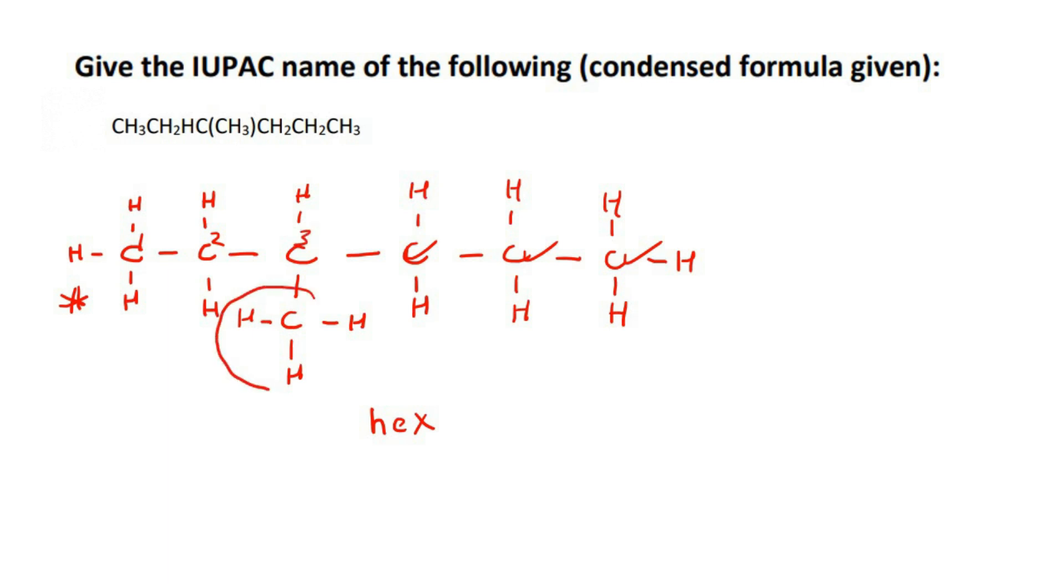In this branch, there is one carbon, so that's meth. We can say methyl because it's a branch. So on carbon three, there is a methyl, and then this whole molecule, is it an alkene, alkyne, alkane, carboxylic acid? Well, it's an alkane. So you end an alkane by naming it like that. There is the final answer.